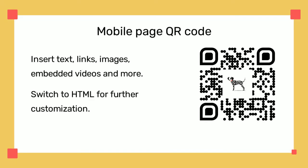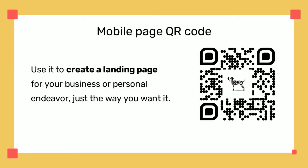Mobile page QR codes start like blank canvases, but they can become professional-looking landing pages. You can insert text, links, images, embedded videos, and more. You can even switch to HTML view to customize it even further. The mobile page QR code is by design the most robust type of QR code because its possibilities are truly endless.